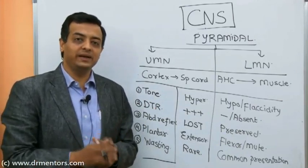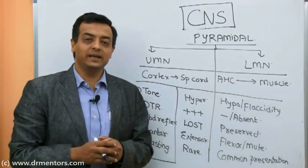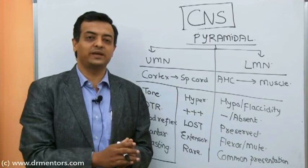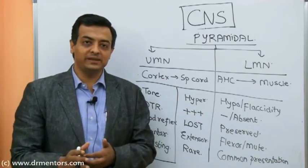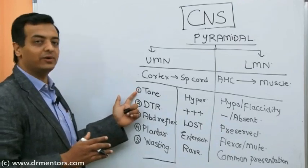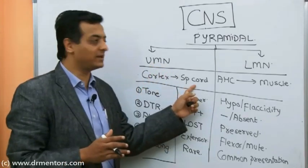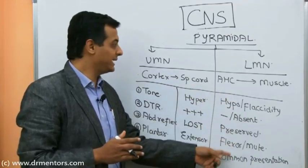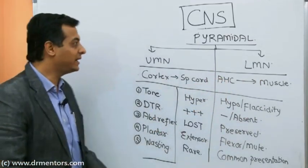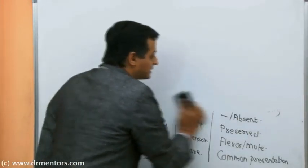If three out of five components belong to the UMN column, you can confidently say the lesion is in the upper motor neuron — that is, between the cortex and the spinal cord. If three belong to the LMN column, the lesion lies between the anterior horn cell and the muscle. This is how we localize the lesion, and based on this anatomical axis we will prepare the neuro-axis of the CNS and classify its disorders.